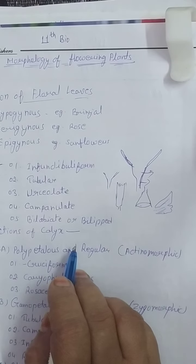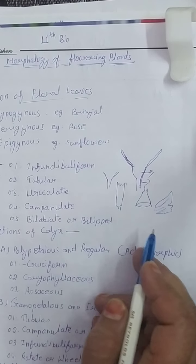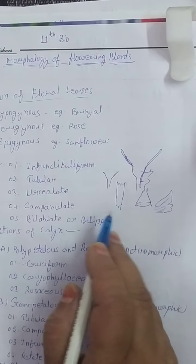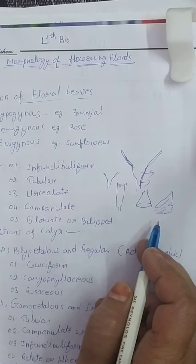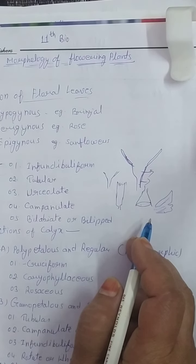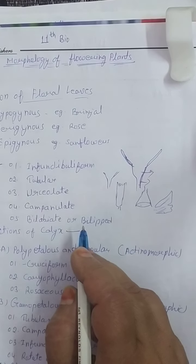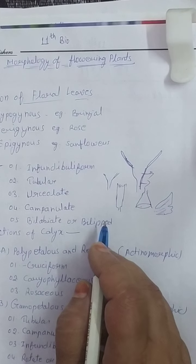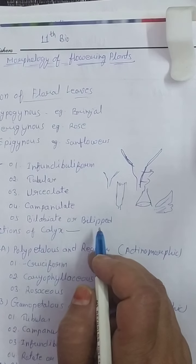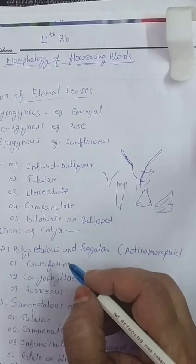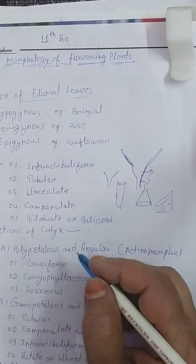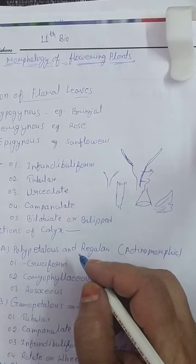The main function of the sepals is protection of the flower during the bud stage. They are green in color and thus synthesize food material by the process of photosynthesis, like leaves. Colored sepals help in the pollination of flowers. When modified into hairy structures, they help in the dispersal of fruits, as in sunflower where the calyx forms a pappus-like structure.